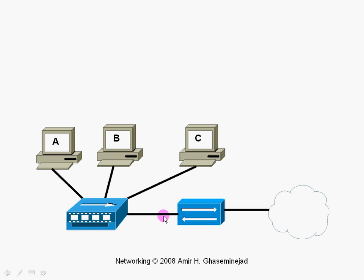If computer A wants to send a message to computer C, then it must compose what is called a frame. In that frame, it must put the network address, the physical address of computer A, and the physical address of computer C — that is sometimes called a MAC address.